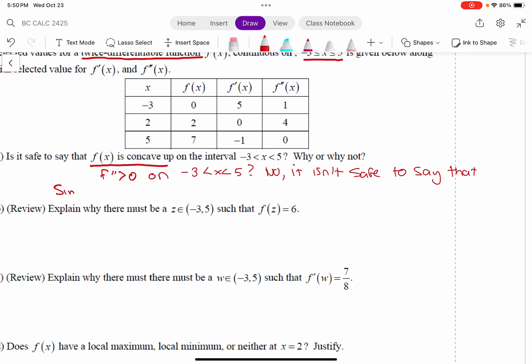Okay, since f double prime could be negative on the interval negative 2 to, or negative 3 rather, to 2, for example, or the interval from 2 to 5.